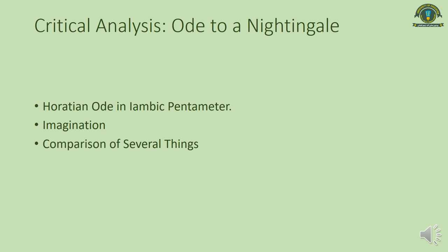'Ode to a Nightingale' is a Horatian Ode written primarily in iambic pentameter. The Horatian Ode is simply a stanzaic form in which all stanzas are structured in the same pattern — the same rhyme, meter, and number of lines. More technically it is non-stanzaic or homostrophic; stanzas are created the way the poet wants to create them. There are five meters used in each line.